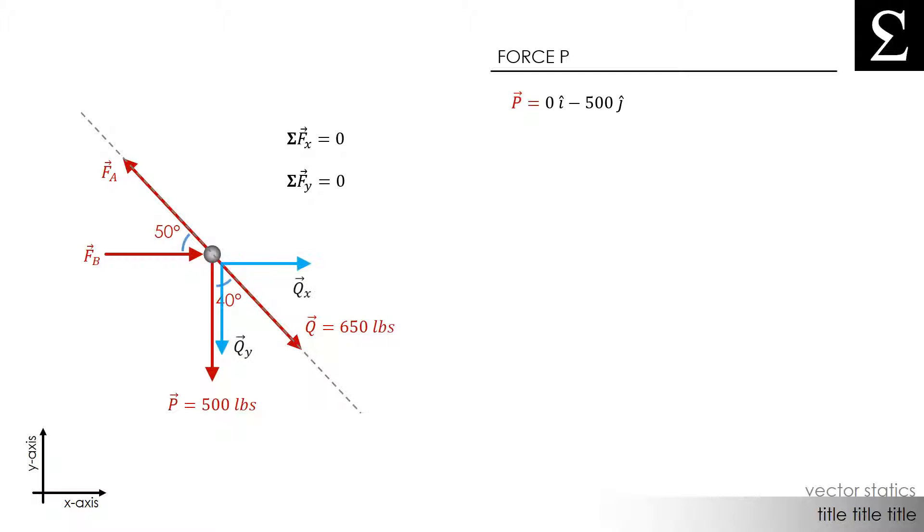Next we can break force Q into its components. In the x direction we have 650 pounds times the sine of 40 degrees and in the y direction we have 650 pounds times the cosine of 40 degrees.